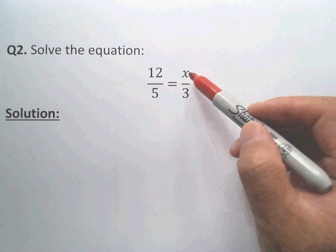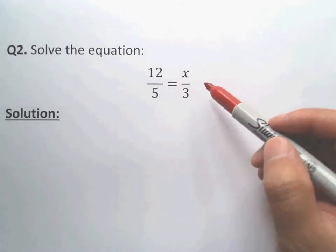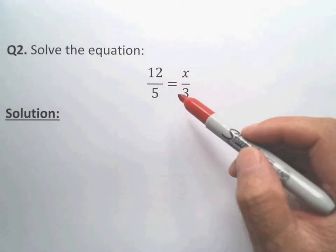No matter if x is on the top or on the bottom, this is a proportion equation. All we need to do is cross multiply.